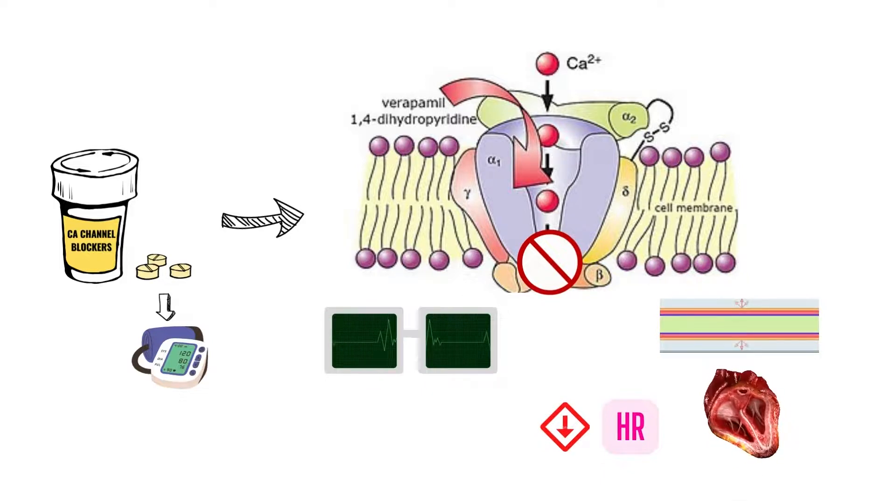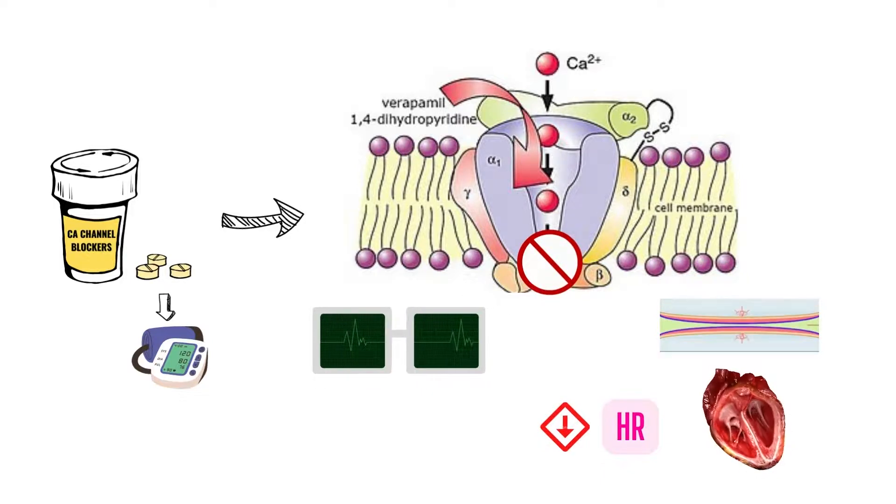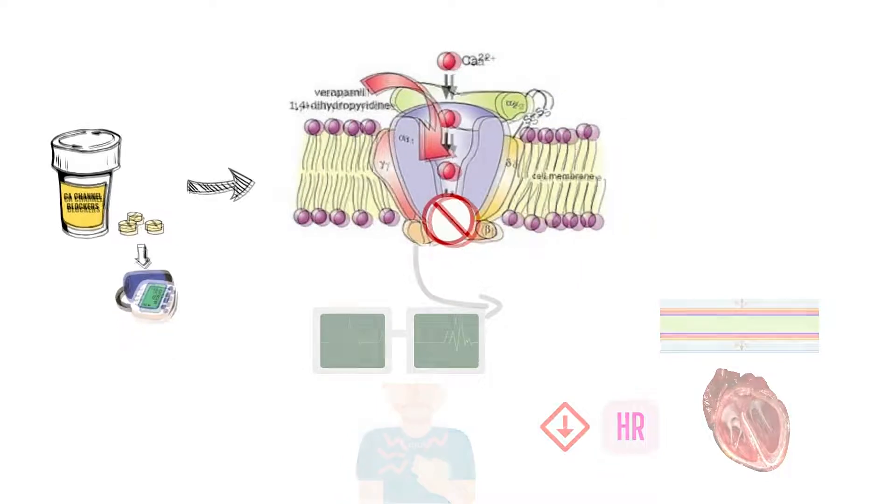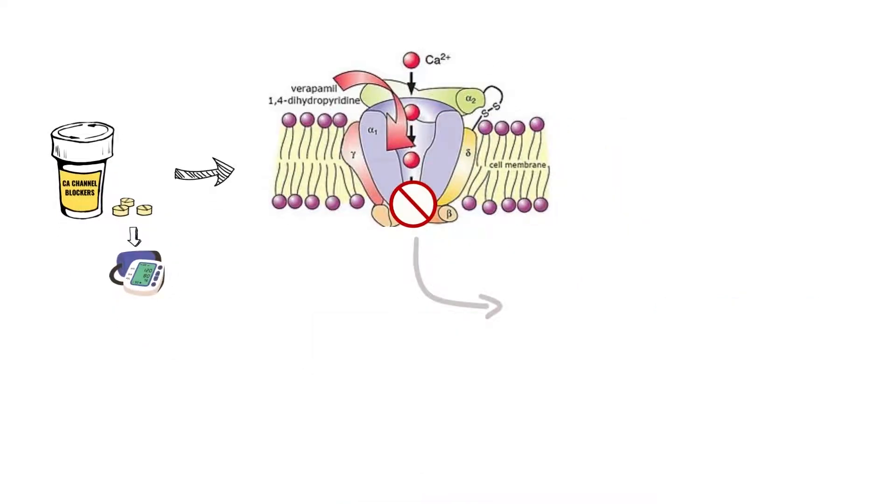Additionally, the drugs may be administered to treat an irregular heartbeat and help relieve angina or chest pain. The calcium channel blockers are also called calcium channel antagonists. So all the clinically used calcium channel blockers are of L-type.